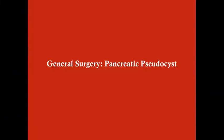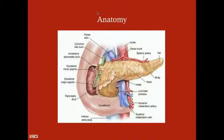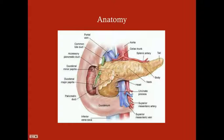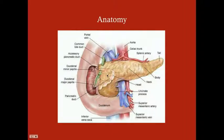We'll talk about the pancreatic pseudocyst. Looking at our anatomy, the pancreas has a head medially, then going laterally the neck, body, and tail on the left side. The pancreas sits posterior to the stomach and duodenum but anterior to the great vessels — the abdominal aorta and inferior vena cava. The pancreatic duct runs from the tail to the head, exits, and joins the common biliary duct to form the ampulla of Vater, entering the duodenum.